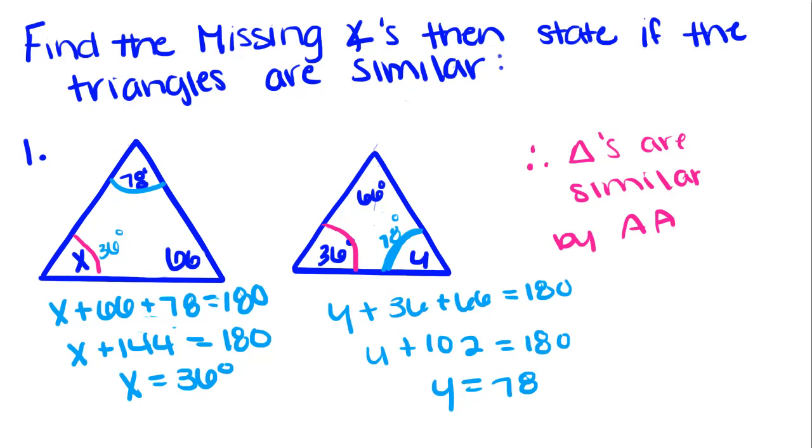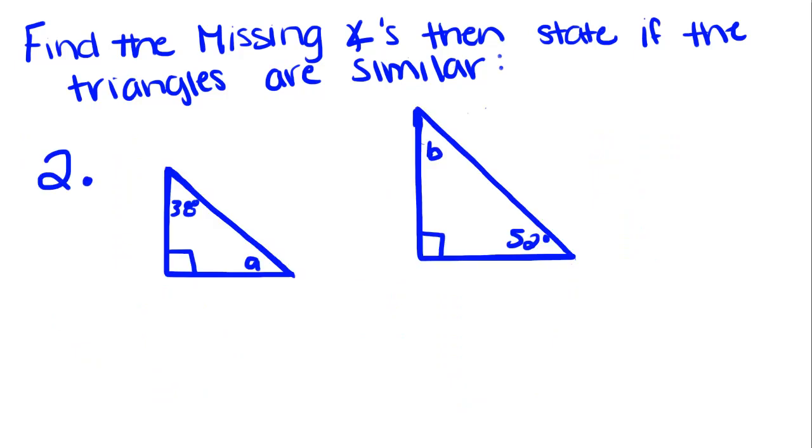And even though we know that this and this is also congruent, all we need to know is that two of these are congruent to prove by angle-angle. So the directions are the same, we're going to do that with this new triangle.